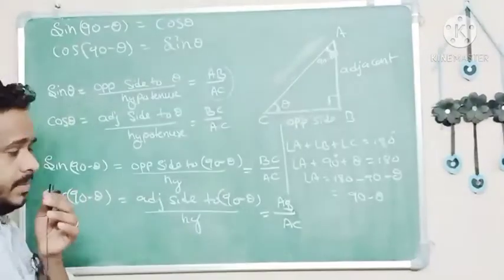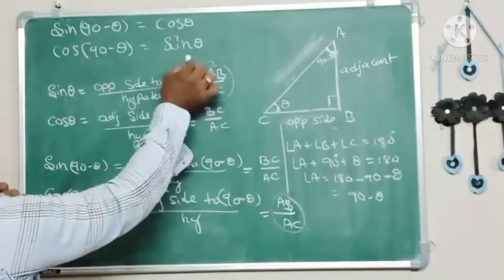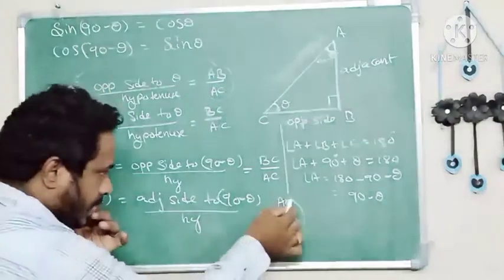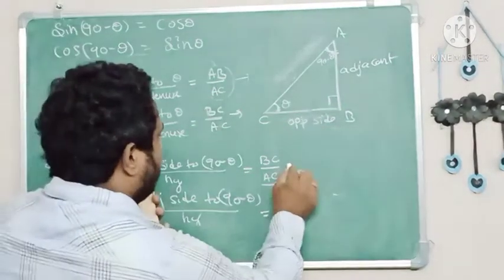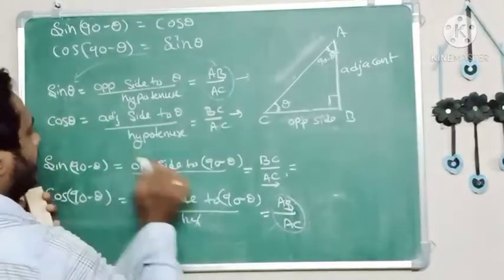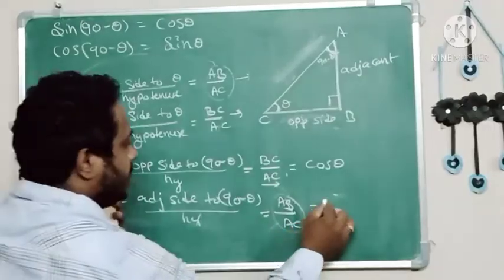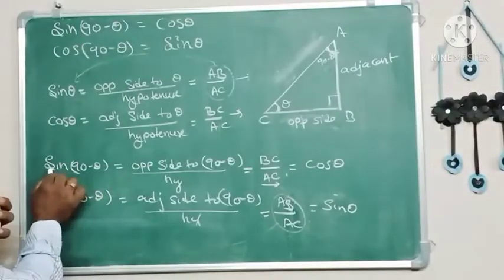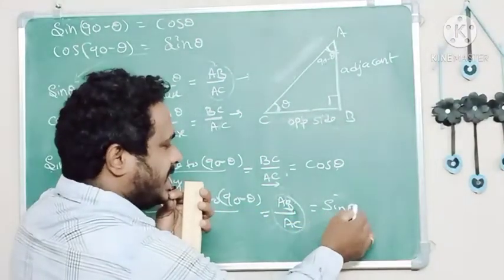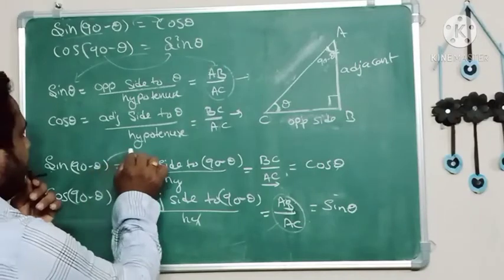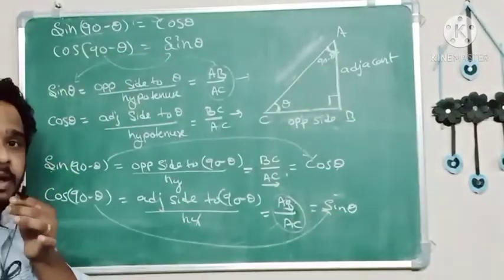Here AB over AC is sin theta, and also AB over AC is cos(90 minus theta). And BC over AC is cos theta. Therefore sin(90 minus theta) equals cos theta, and cos(90 minus theta) equals sin theta. Hence proved.